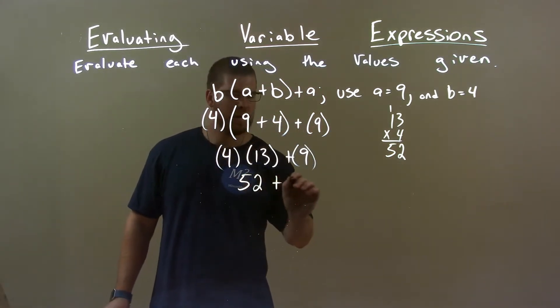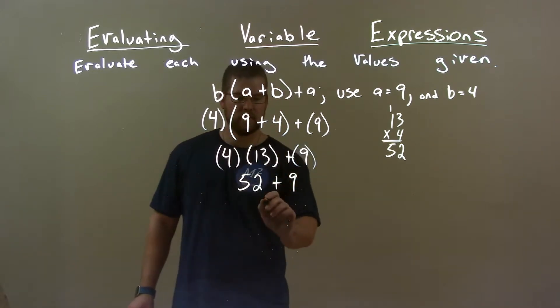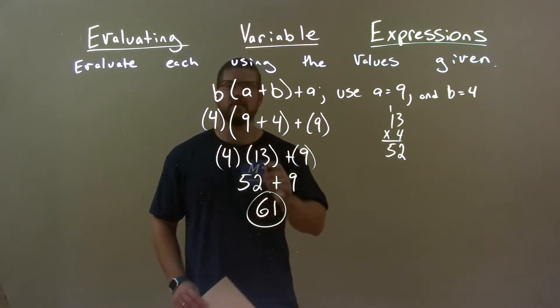So we have 52. Bring down the 9. 52 plus 9 equals 61. And so our final answer is just 61.